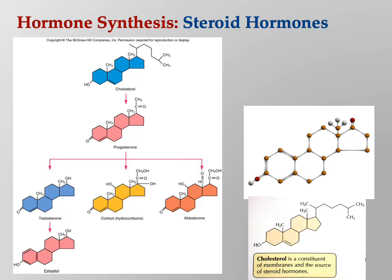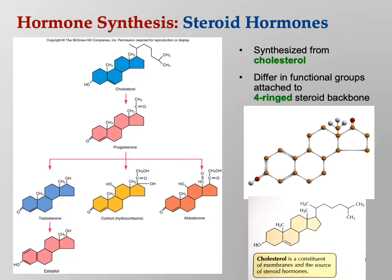So let's talk about making steroid hormones. Over on the right you see cholesterol — that four-ring structure. I want you to be able to recognize that; sometimes I put that on an exam. Cholesterol becomes progesterone, which then can become testosterone, cortisol, aldosterone. Testosterone then can become estradiol. Cholesterol is indeed the backbone upon which all steroid hormones are built.